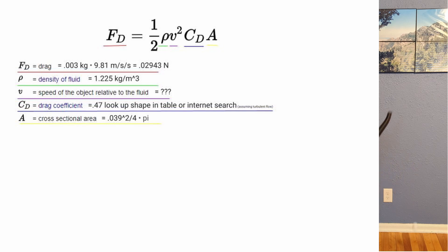The cross sectional area will be the area of a circle, which is just the diameter squared divided by 4 times the constant pi.